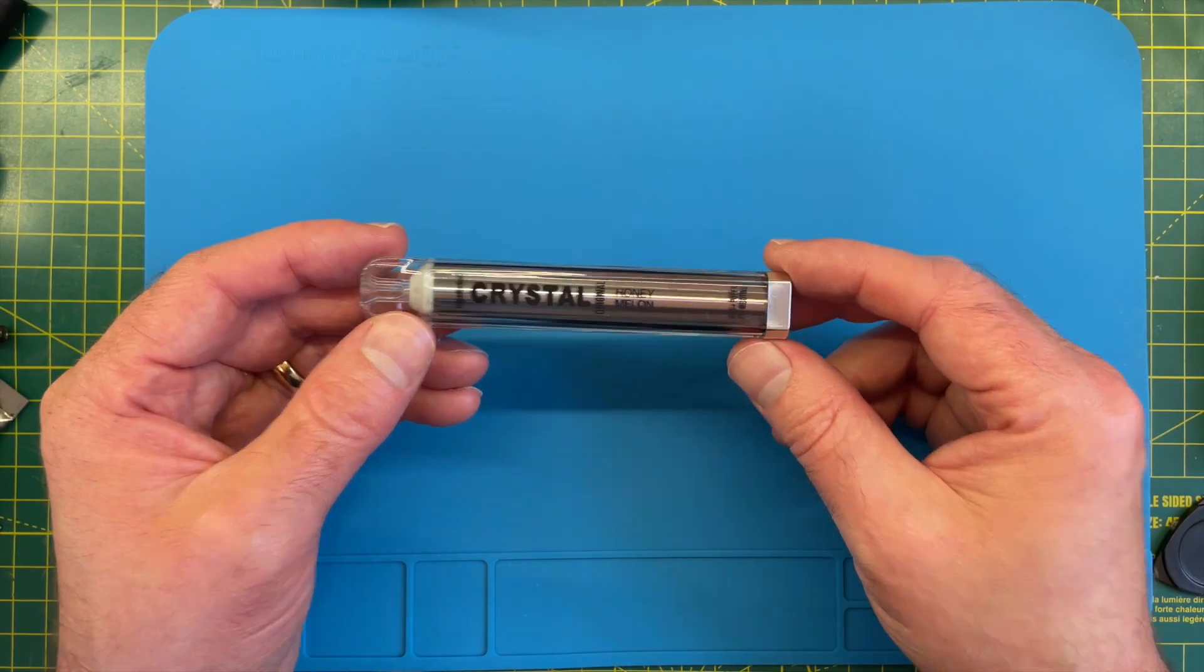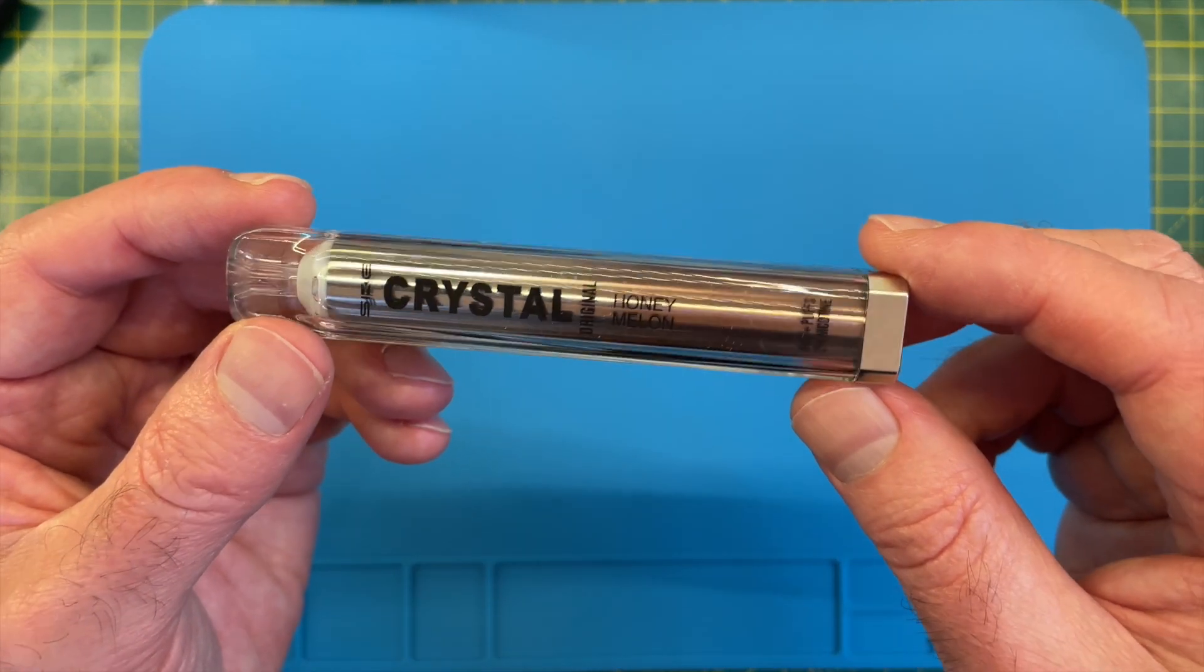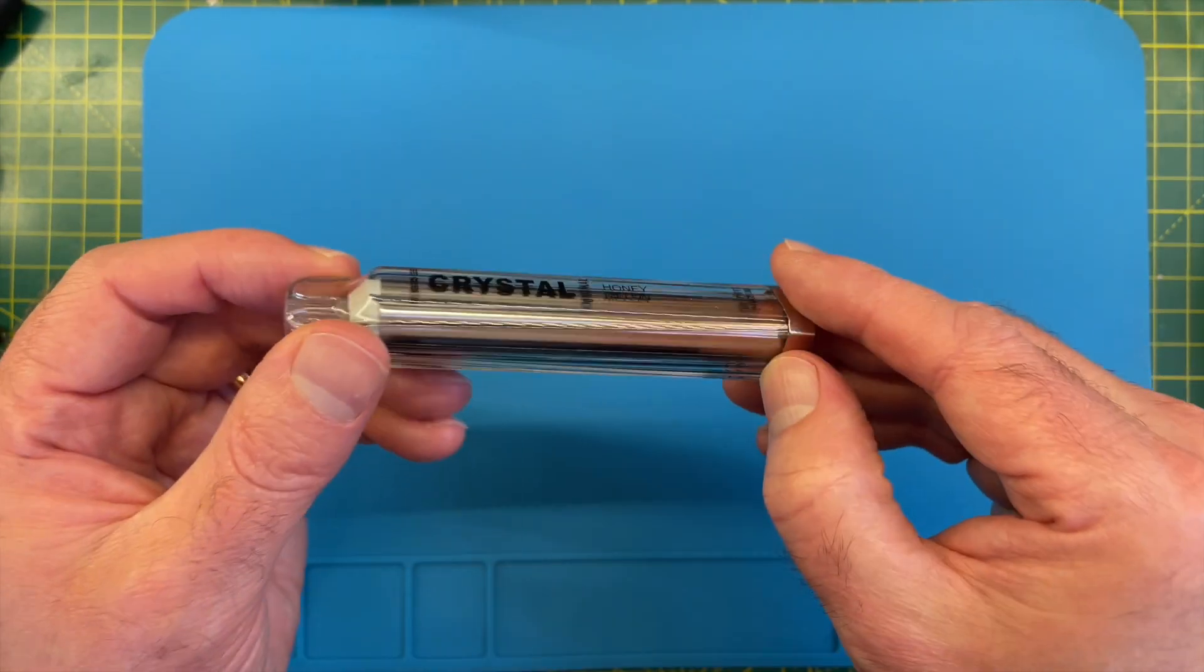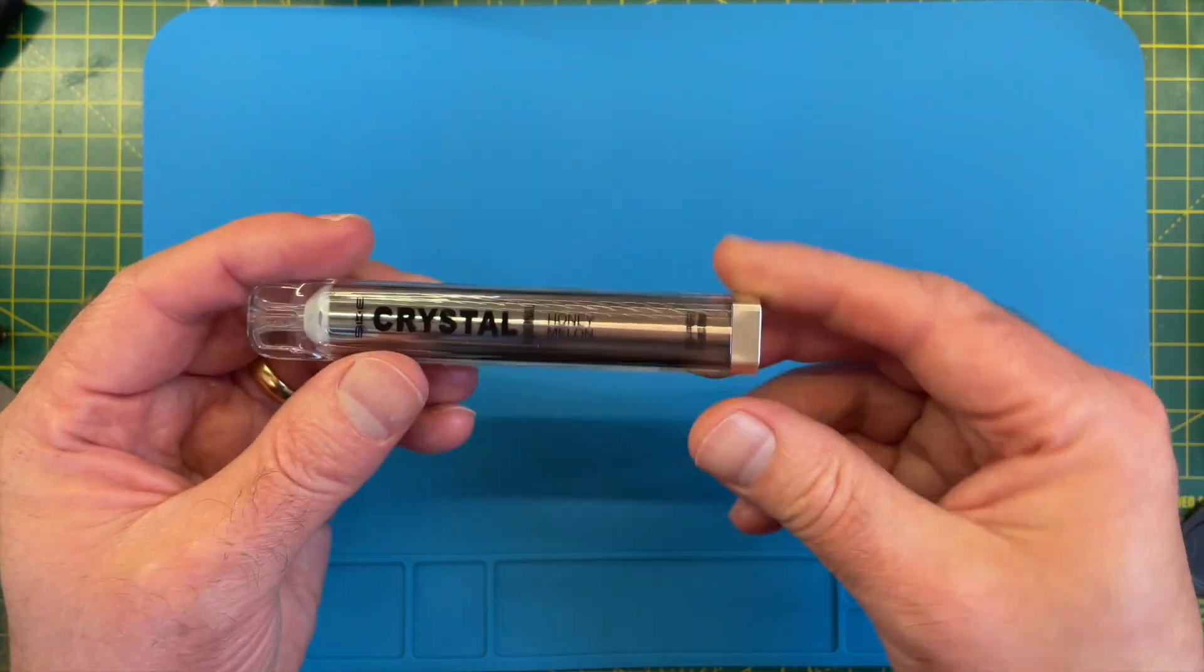So I found another thing from the street. It's a Crystal Honey Melon. So let's get this open and see what kind of battery it's got inside.